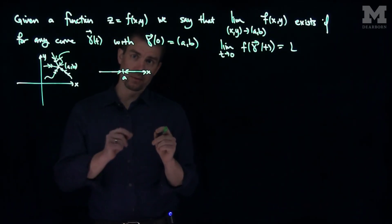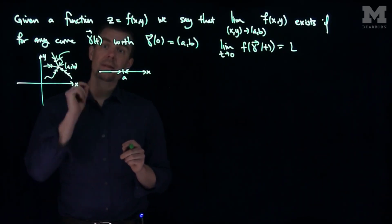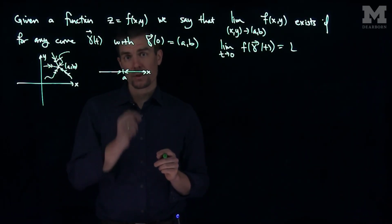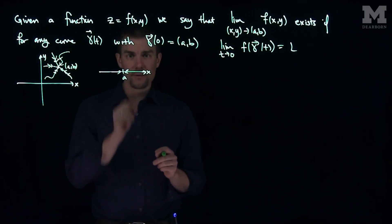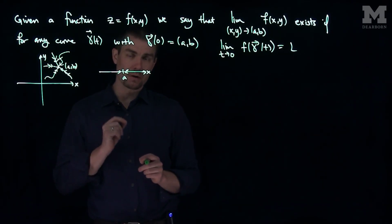If you have a function of two variables, there are lots of different paths for you to get to a, b. For any such path, the limit has to be the same for the limit to exist. So it's very difficult for a function of several variables to have a limit that exists because it has to agree on every single curve.